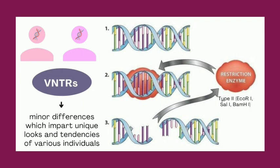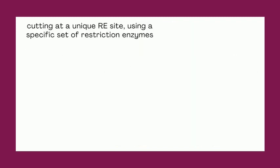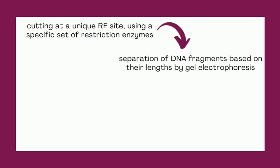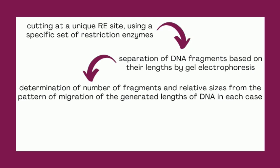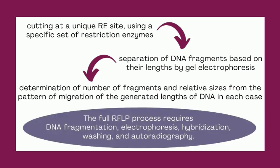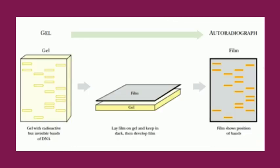The steps of RFLP include cutting at a unique restriction enzyme site using a specific set of restriction enzymes, then separating the DNA fragments based on their lengths by gel electrophoresis, and determining the number of fragments and relative sizes from the pattern of migration. The complete RFLP process requires DNA fragmentation, electrophoresis, probe hybridization, detection, washing, and autoradiography. The detected RFLP is visualized using X-ray film in autoradiography.